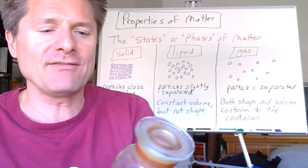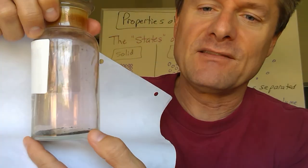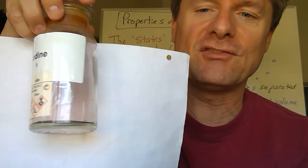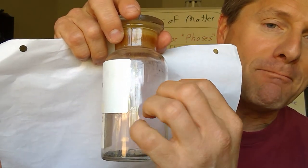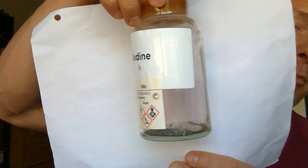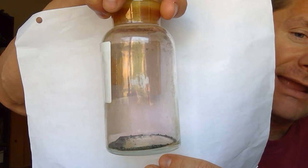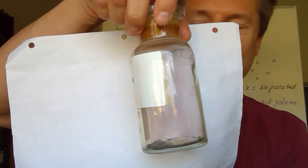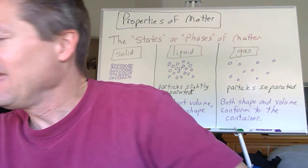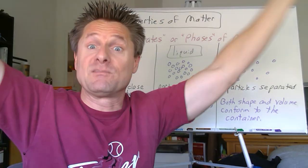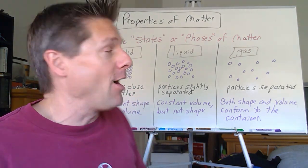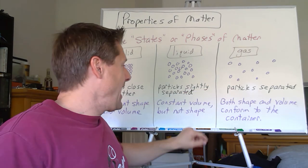I actually have some iodine — one of my favorite elements. This is a solid iodine, and this is called sublimation. You can see that purple vapor in there. It sublimes directly to a gas at room temperature, and that gas immediately conforms to the shape and volume of the whole container. If I put this iodine into a different container, it would conform to that container too. Obviously if I don't trap it, those gas particles would just go out and disperse into the atmosphere.